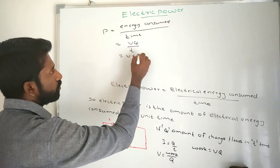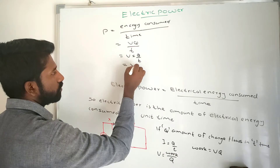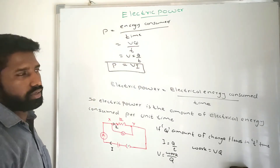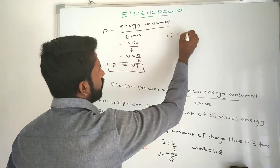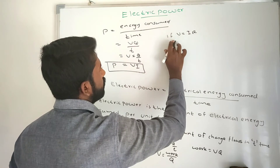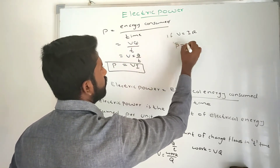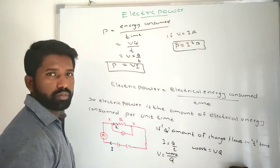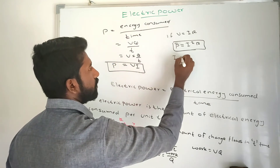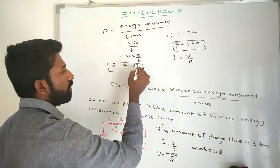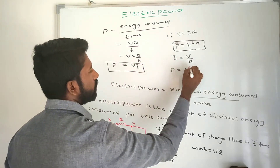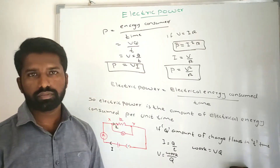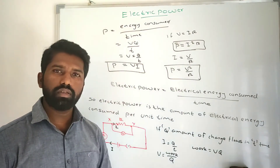So power P can be written as V multiplied by Q divided by T. Since Q divided by T equals current I, we get P = VI. Substituting V = IR into this, P is equal to I squared R. That is another formula for power. Also, since I = V divided by R, power P is equal to V squared divided by R. This is another formula for electric power.